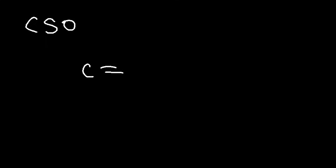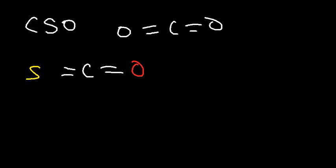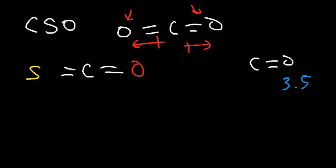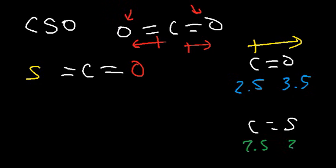Another example is CSO, which looks like CO2 and CS2. In CO2 the dipole moments cancel because the outer elements are identical. But in CSO, the C–O bond is polar (carbon EN 2.5, oxygen EN 3.5), while the C–S bond is nonpolar (both approximately 2.5). There is only one dipole moment present, so this molecule is polar.